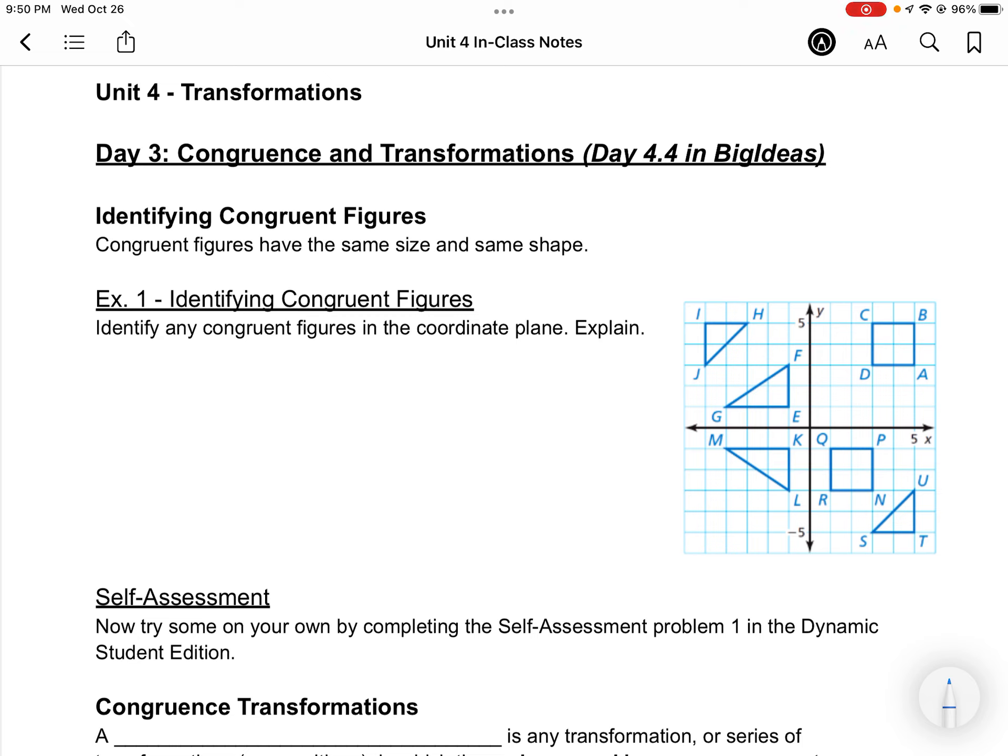If you remember how to get into that Big Ideas login, once you log in, click the blue Continue button to open up your Dynamic Student Edition and make sure you select the Table of Contents for Chapter 4, and this is Lesson 4.